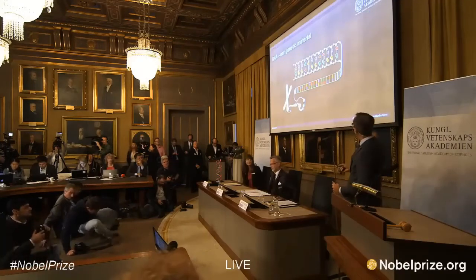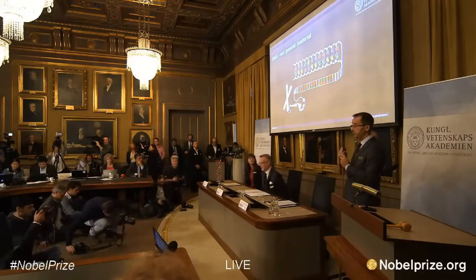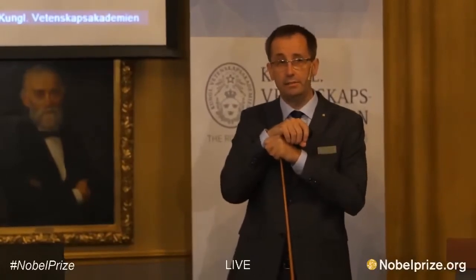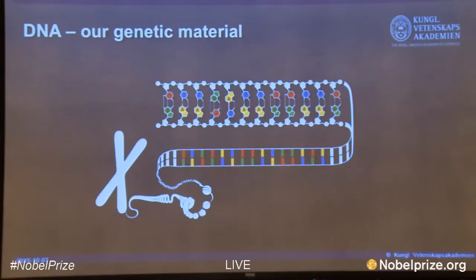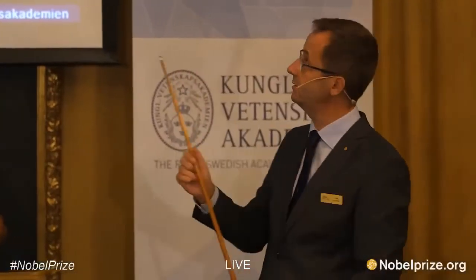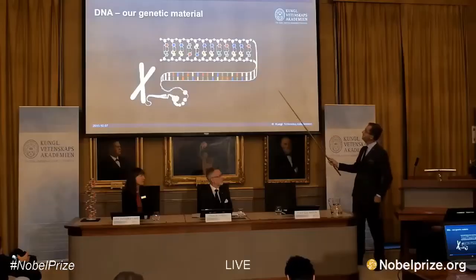This is our DNA, our genetic material. In every single cell in our body, we have genetic material that includes the information for the creation of a human being. This information is stored in DNA and is written with a very simple chemical language containing only four letters or four bases: A, T, G, and C.